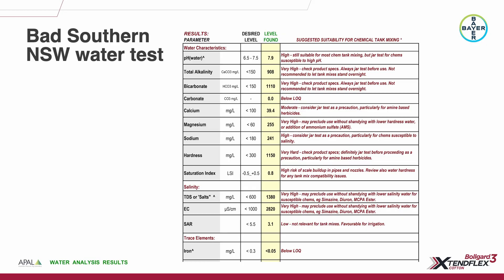This third water test is a bad southern water test. If presented with water of this characterisation, you'd be looking for an alternate supply. The hardness and the bicarbonates are both over 1,000 ppm, putting them way out of spec for a lot of chemistry. I really question whether using water like this over time has contributed to resistance development — it's leading to a sublethal dose, the chemistries have to work harder, and we're selecting for plants that survive that sublethal dose.